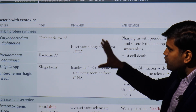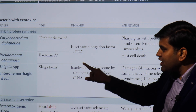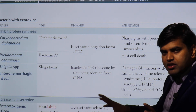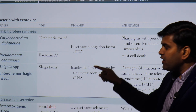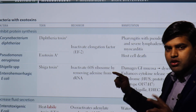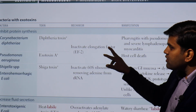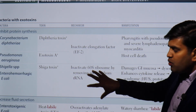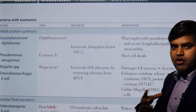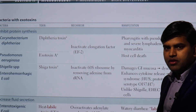In summary, exotoxins inhibiting protein synthesis are released by Corynebacterium diphtheriae, Pseudomonas aeruginosa, Shigella species, and enterohemorrhagic E. coli. Inhibition occurs by two mechanisms: inactivation of elongation factor EF-2 (diphtheriae, Pseudomonas), or inhibition of the 60S ribosomal subunit (Shigella, EHEC). These are important points that could be tested in USMLE-style questions. Thank you.